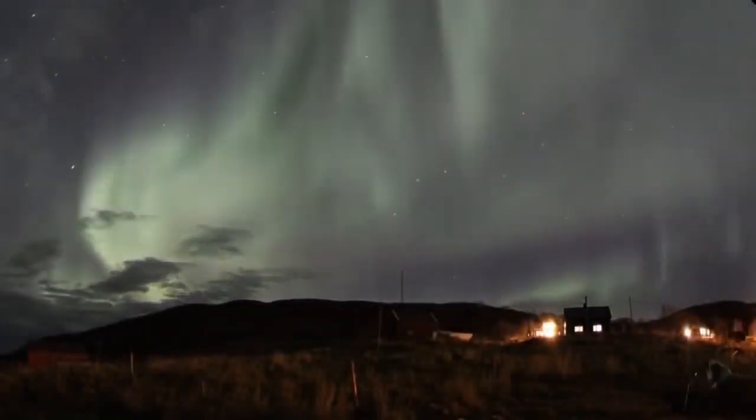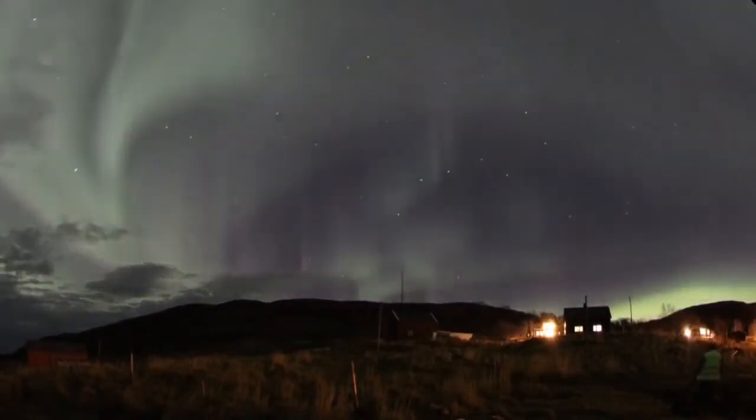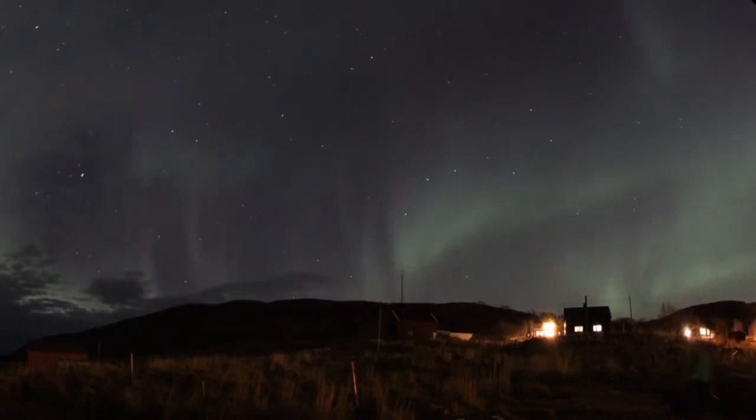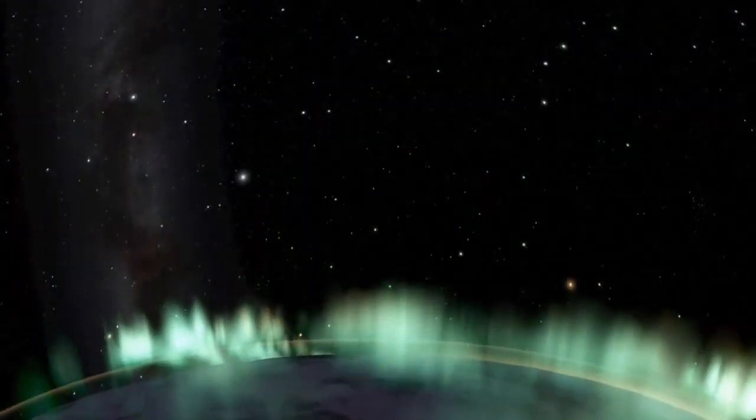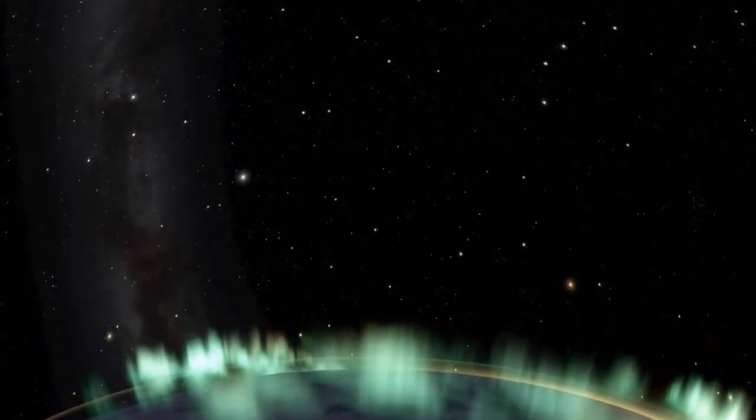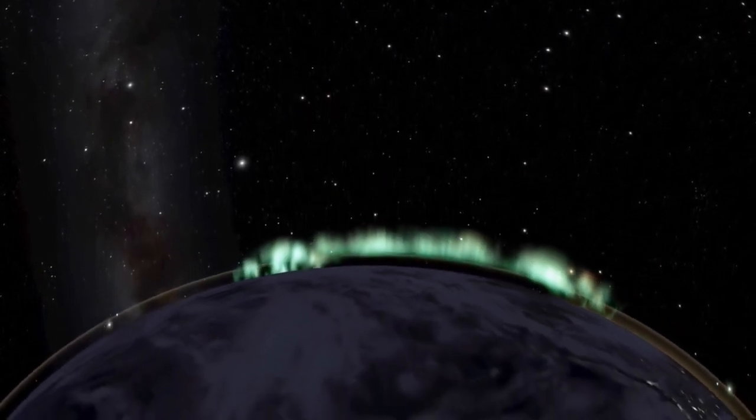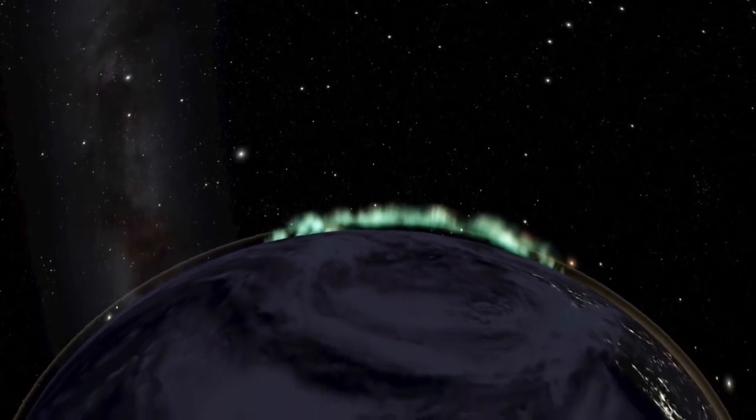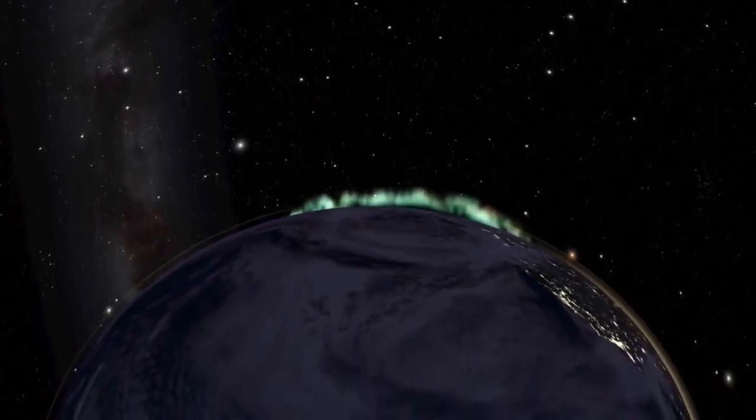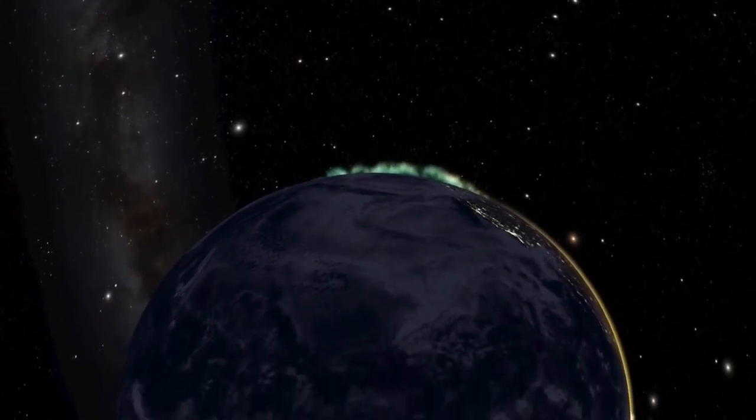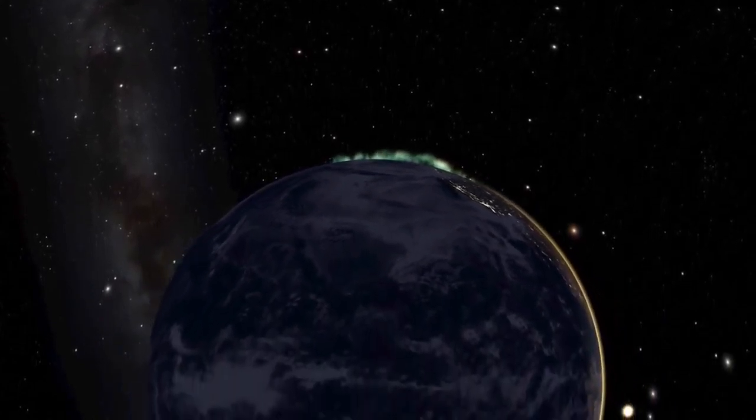Auroras crown our home world. They promise that our magnetic field still shields us from deadly solar storms, as well as cosmic rays from far away supernovas. Within our protective cocoon, life has flourished, evolving into more complex forms and finally giving rise to sentient beings, aware of the magnetosphere, which surrounds and protects the life-bearing Earth below.